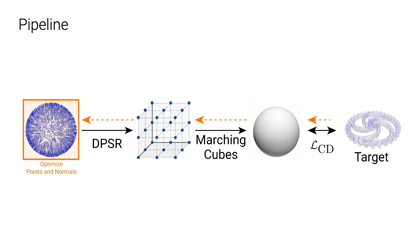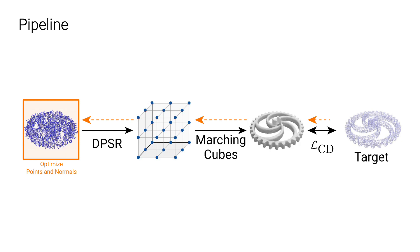Now, every step is differentiable including our DPSR, so we can update the source point clouds under the optimization pipeline. Therefore, this optimizable source point clouds together with our Poisson solver is treated as the shape-as-points representation.